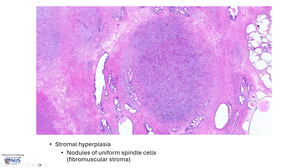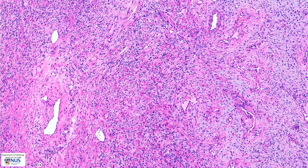This is an area of stromal hyperplasia where we can see nodules of uniform spindle stromal cells, and at higher magnification we can often see quite prominent thick-walled vessels in these areas of stromal hyperplasia.